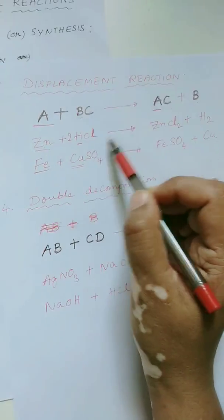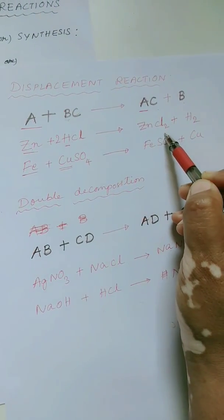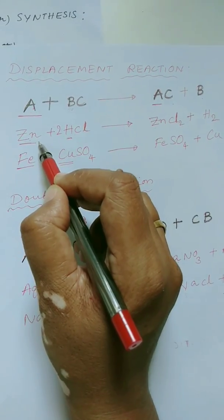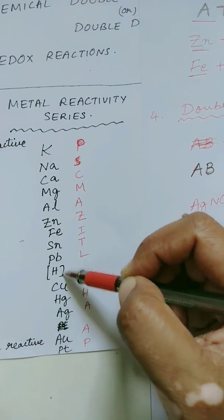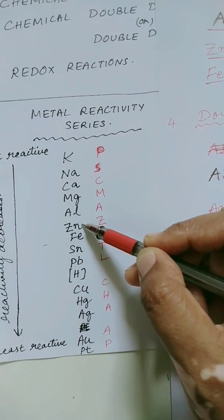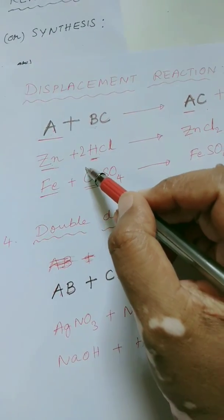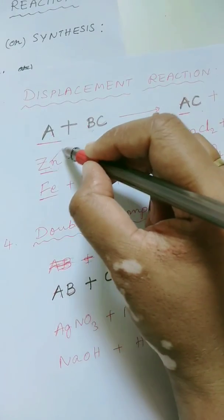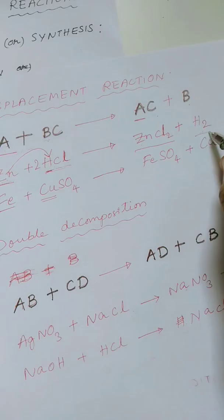Zinc, when it reacts with HCl, it forms zinc chloride and hydrogen gas is evolved. Now, zinc is a metal which is more reactive than hydrogen. If you see the reactivity series, zinc is above hydrogen. That means hydrogen is lesser reactive than zinc. So what does zinc do? It displaces hydrogen — it removes hydrogen from its compound HCl — and zinc takes its place, forming a new compound zinc chloride, and hydrogen gas is released out.